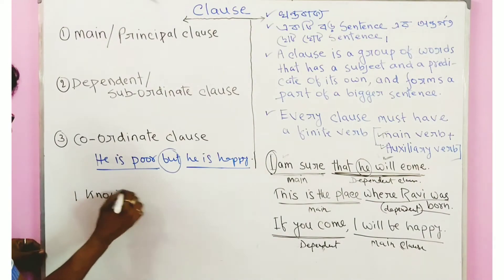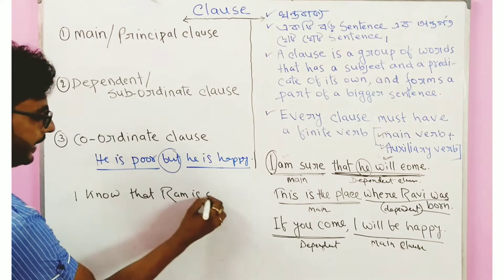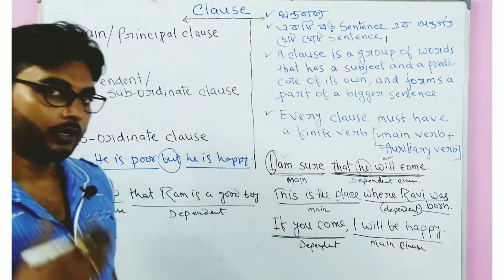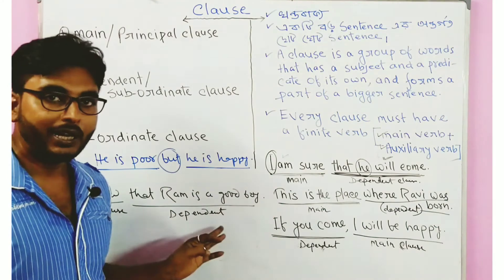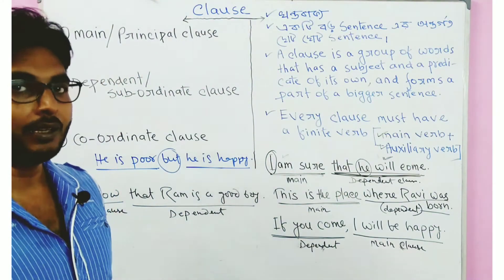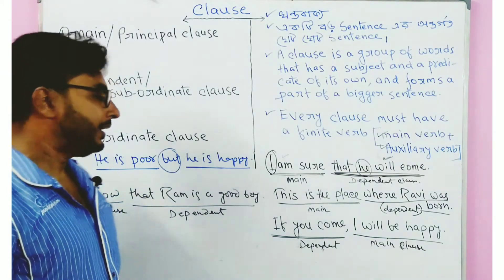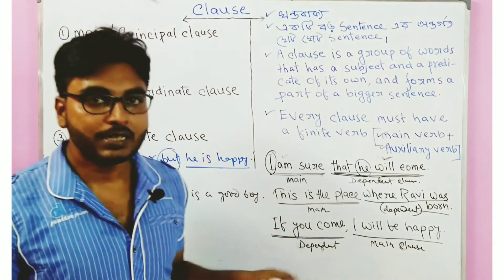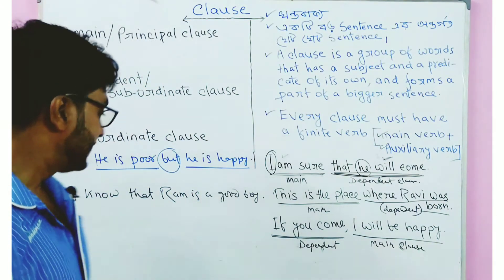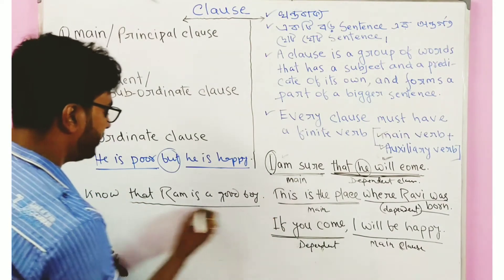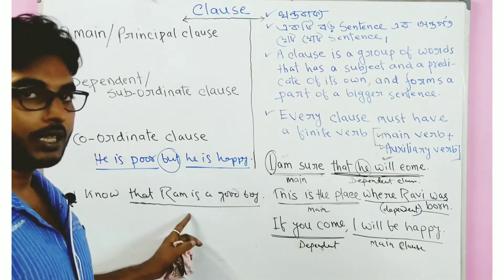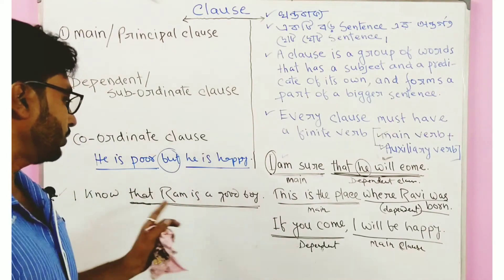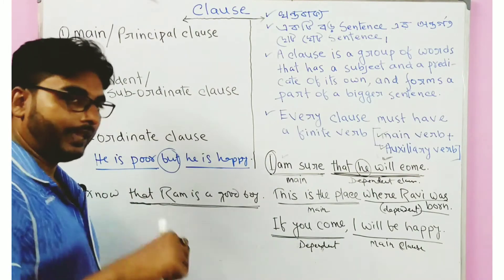For example: 'I know that Ram is a good boy.' In competitive exams, you may be asked to identify and underline the main clause and the dependent clause in a sentence. Complex sentences contain a main clause and a dependent clause. 'Ram is a good boy' is the main clause, and the dependent clause completes the complex sentence.